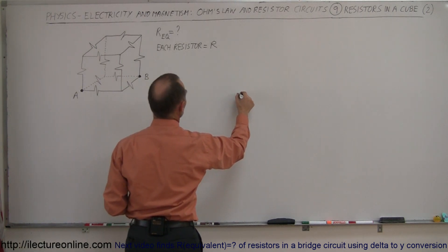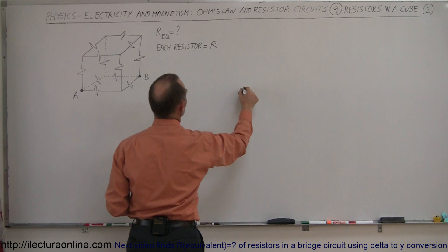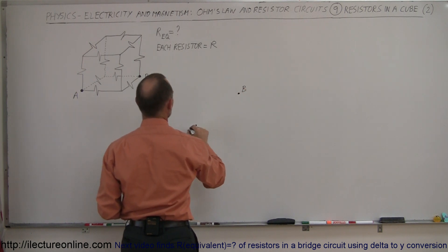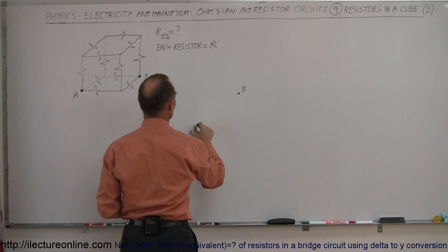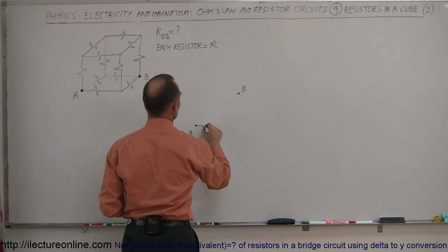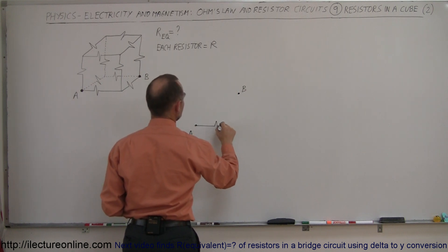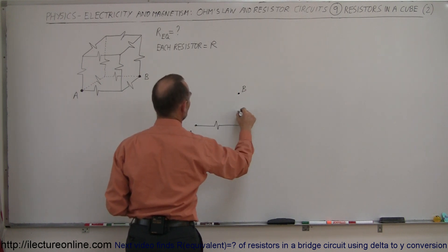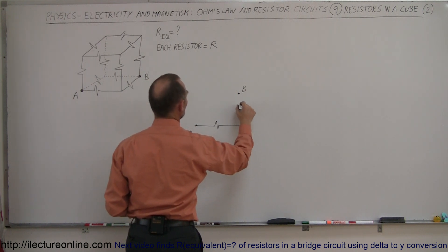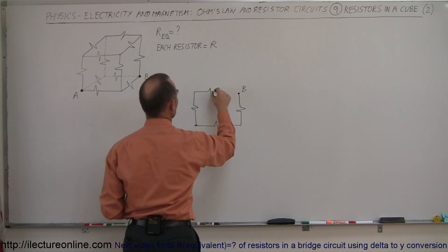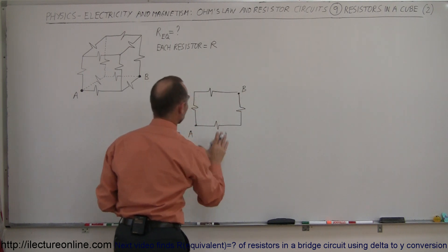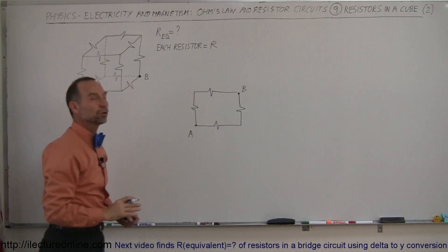So we have B over here and A over here, and then we have the four resistors — here's one, here's two, here's a third one, and the fourth one. That's the bottom of the cube.